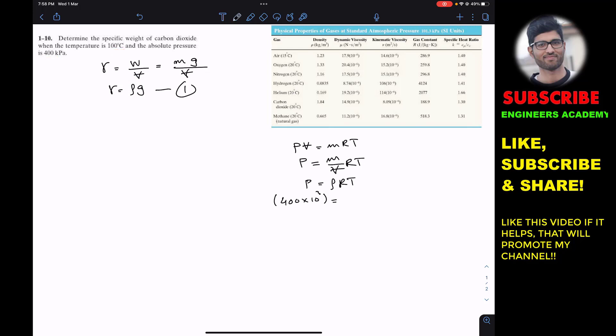Then we have rho, and we need to find the gas constant for carbon dioxide from appendix A of RC Hibbeler. For carbon dioxide, the R value is 188.9 Joule per kg Kelvin. The temperature is 100 degrees C, so that is 100 plus 273, which gives us Kelvin.